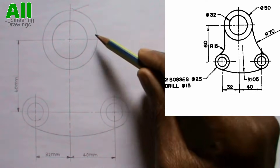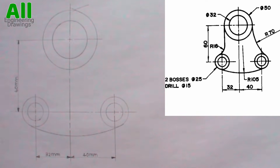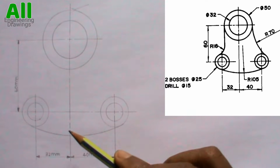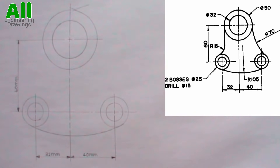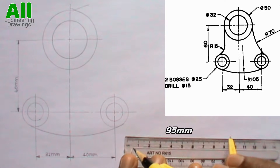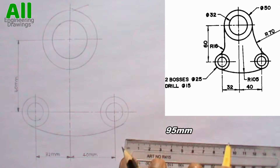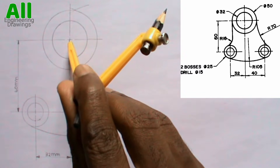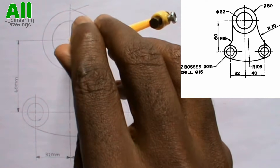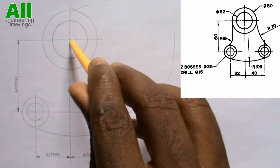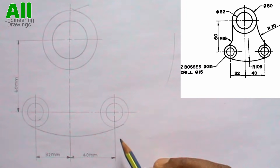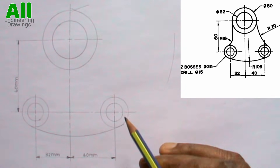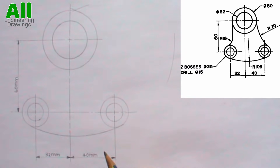Now it is time to produce the tangential arc on this side. From the question, the radius of the tangential arc this side is 70mm, and we know the radius of this circle here is 25mm. So we will add 70 plus 25 because the tangential arc is an external arc. Then I will place my compass on the centre of this circle and cut an arc. The radius of the other circle here is 12.5mm, and the tangential arc is 70mm and it is an external arc, so we will add 70 plus 12.5 which gives us 82.5mm.